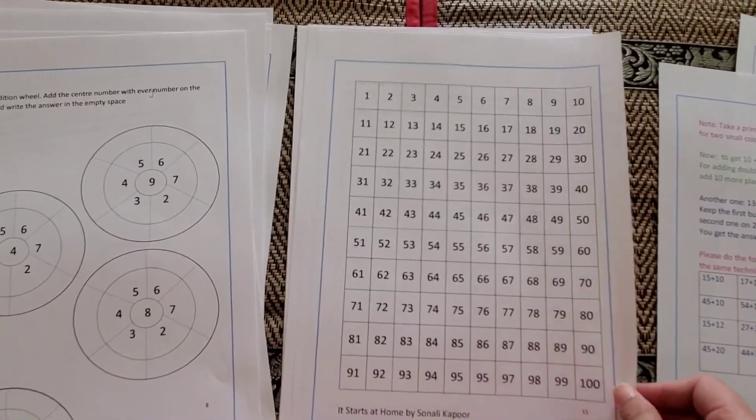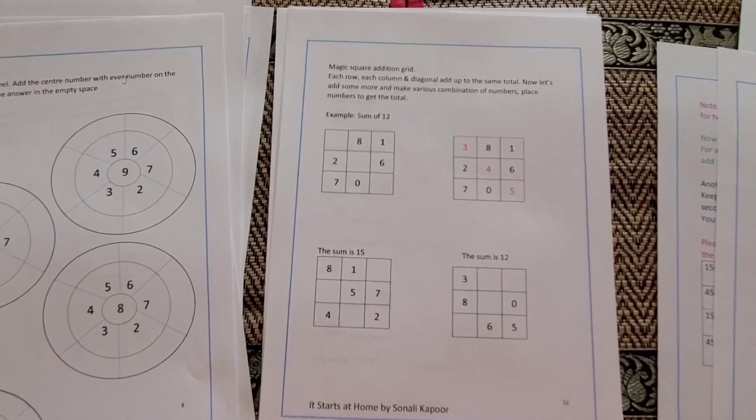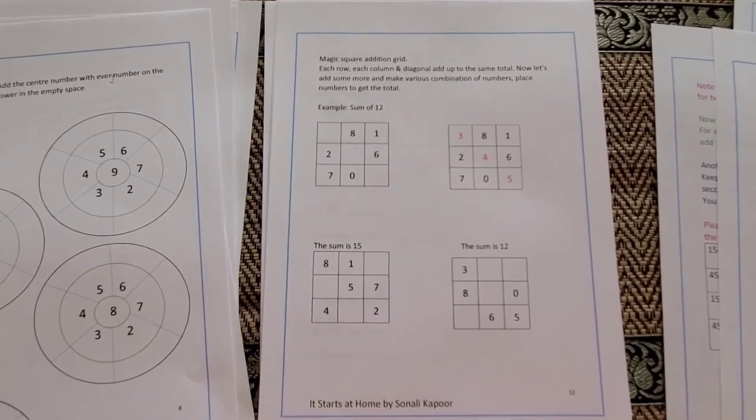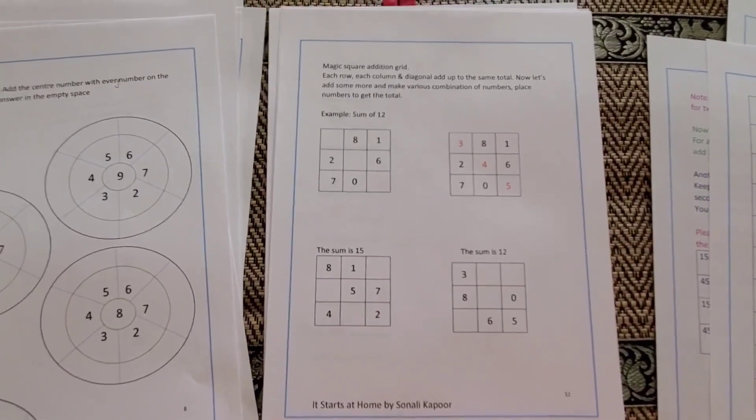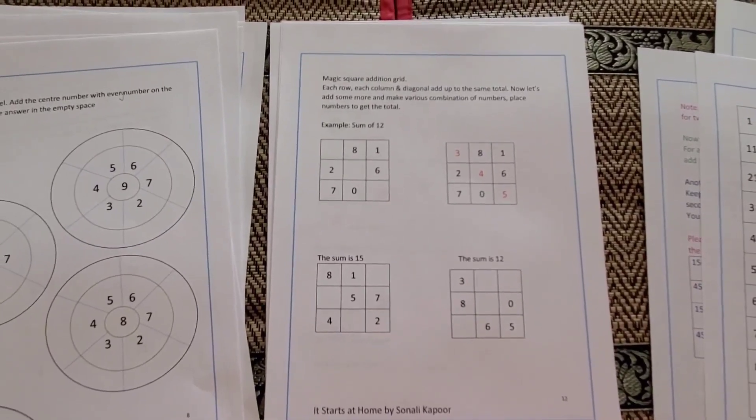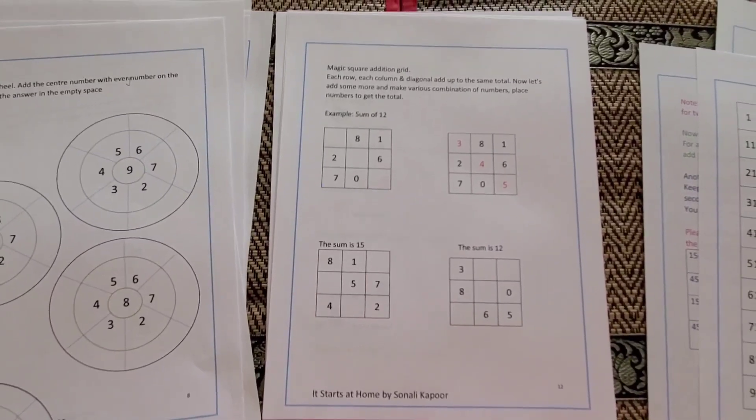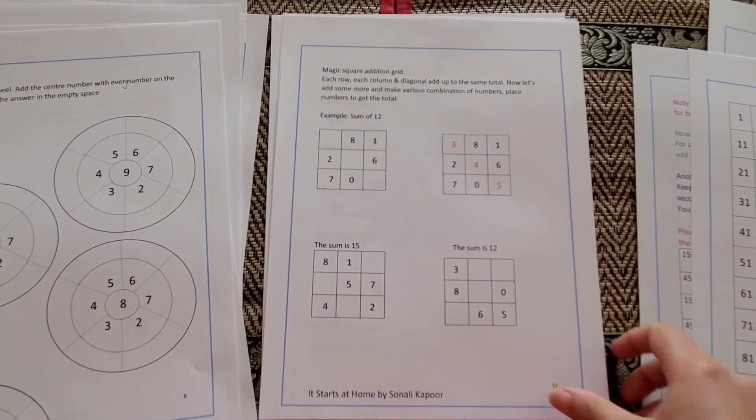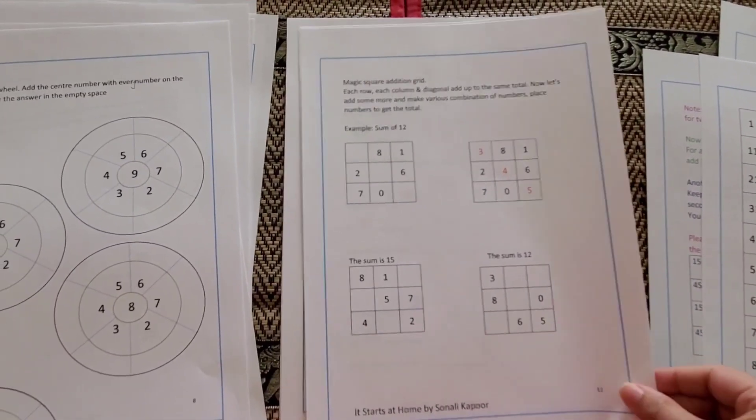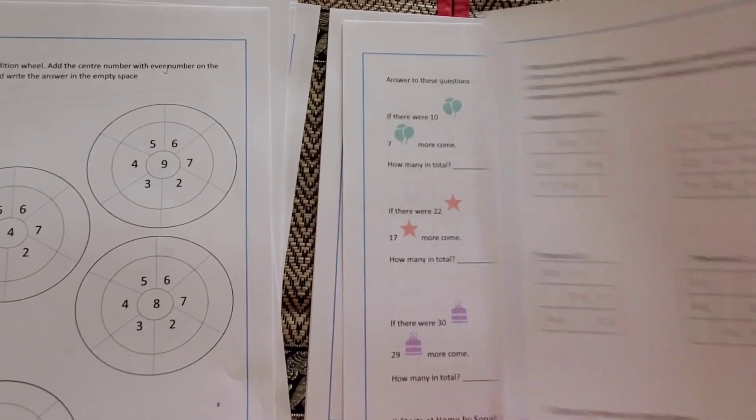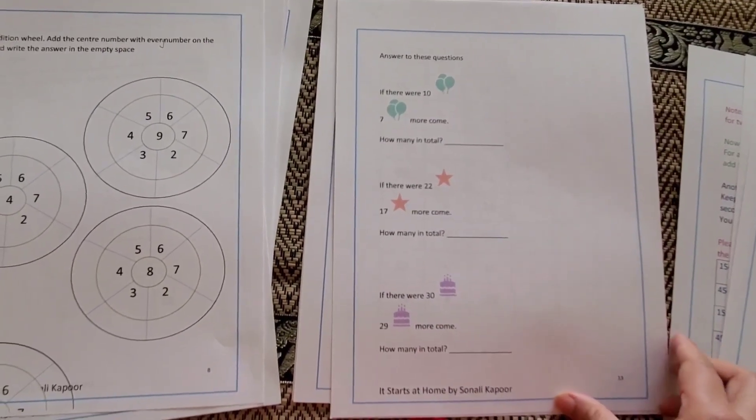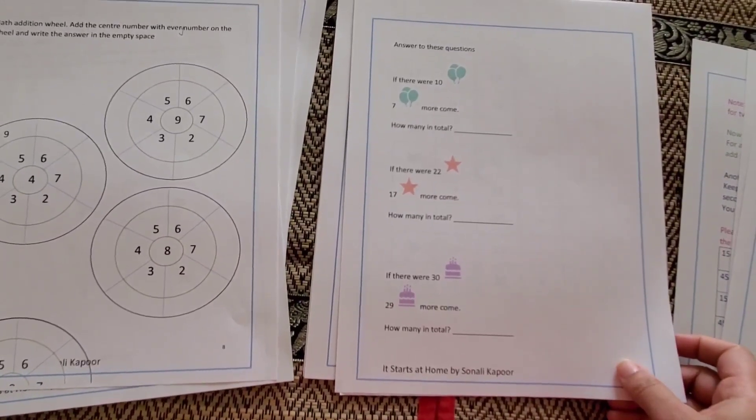Then you have a magic square addition grid. This is something that we really love, and I've done a video already which I will be linking up - all the addition videos and the activity sheets that I've done. So in case if you don't understand how to do it, you can always go through all those videos. This was magic square grid.